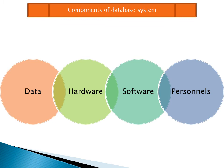Next is software. We can define software as a set of instructions given to the computer to solve a problem. Different types of software work in a computer, like system software and application software. Software enables the computer to work properly, and application software is used for specific purposes. Without software, a computer cannot work. So software is also a most important component of a database system.